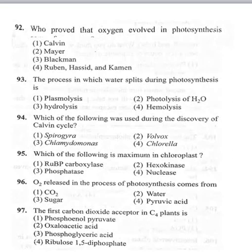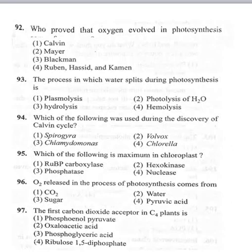95th question: which of the following is maximum in chloroplast? Option 1 RuBP carboxylase, option 2 hexokinase, option 3 phosphatase, option 4 nuclease. The chloroplast contains different types of pigments and enzymes. RuBP carboxylase is the enzyme that fixes carbon dioxide, and the chloroplast contains the maximum amount of RuBP carboxylase to fix more carbon dioxide. Correct option is first: RuBP carboxylase.